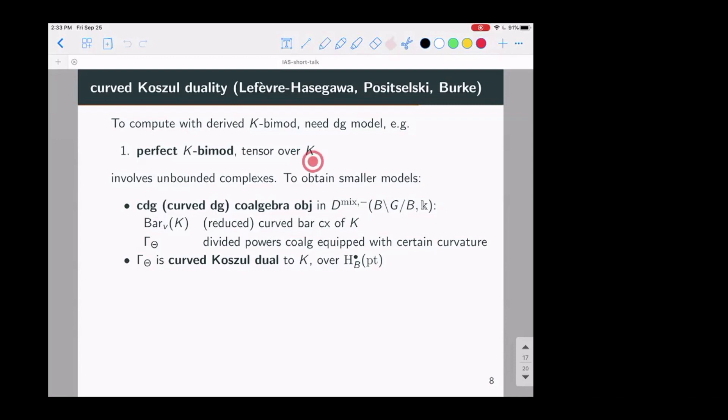So when you run this machine, it turns out that associated to this Koszul complex, this algebra K, you get some co-algebra object, but actually equipped with some curvature. So you end up in this way working naturally with some curved complexes, some curved DG co-algebra and curved module or co-modules over these things.